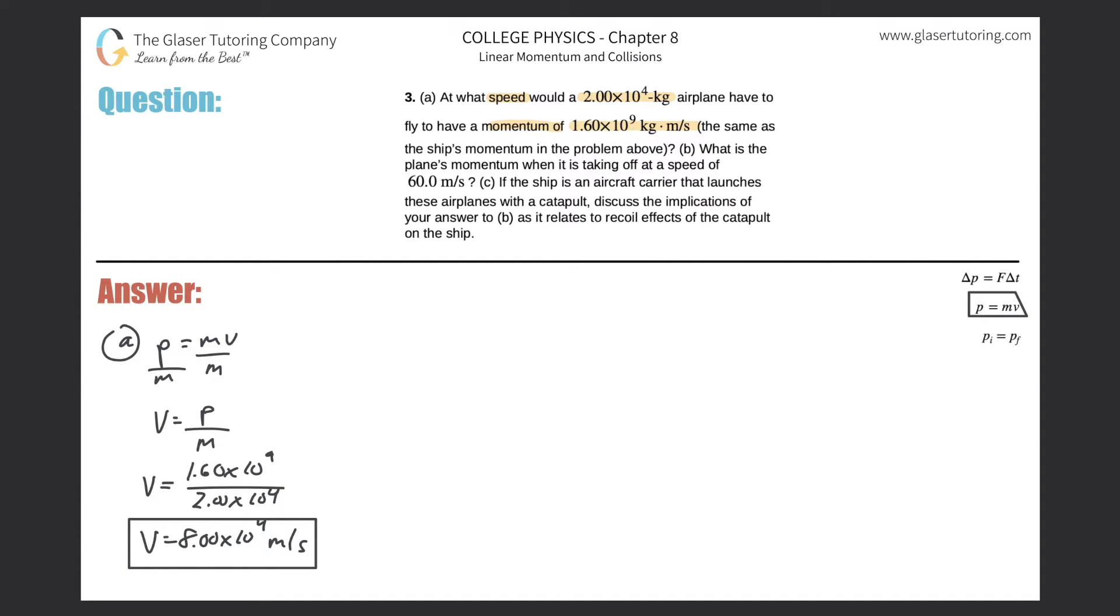All right, so that takes care of that. And then what is letter B? What is the plane's momentum when it is taking off at a speed of 60 meters per second? So letter B now. We're being asked for momentum, and they're giving us a speed.